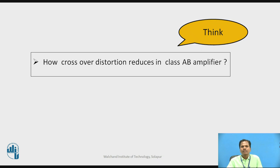How is crossover distortion reduced in Class AB power amplifier? In Class AB power amplifier, each transistor is slightly forward biased by an amount equal to VB, the cut-in voltage, and its DC operating point is set just above the cutoff region. So as soon as input AC signal is applied, the transistor conducts and output collector current immediately starts flowing. In this way, the crossover distortion is eliminated in Class AB power amplifier.